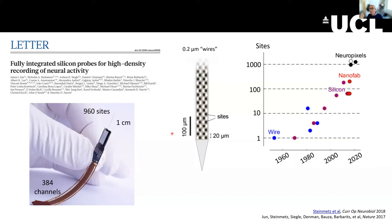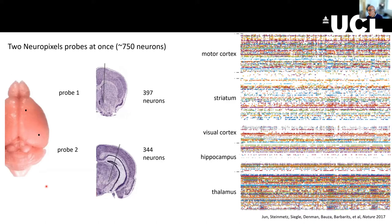A Neuropixels probe has 960 sites over one centimeter, but only 304 channels which you need to assign to the sites. All the amplification and digitization happens on board. With these probes, the community has been doing some pretty remarkable experiments. When I was a PhD student, my entire thesis was about 200 neurons. Nick recorded about 750 neurons in just half an hour by putting two probes in at the same time.